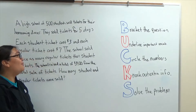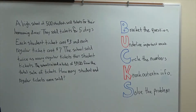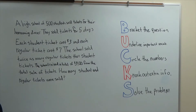So here I have an example work problem. A high school of 500 students sold tickets for their homecoming dinner. They sold tickets for five days. Each student ticket cost three dollars and each regular ticket cost seven. The school sold twice as many regular tickets than student tickets. The school raised a total of three thousand four hundred dollars from the total sale of tickets. How many student and regular tickets were sold?